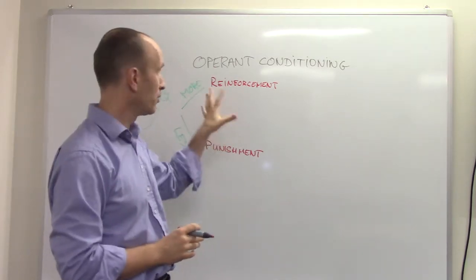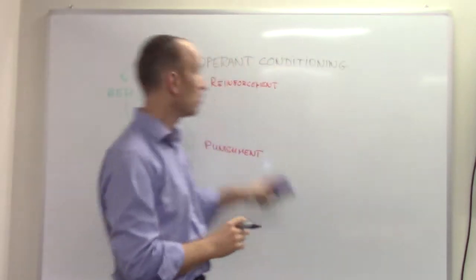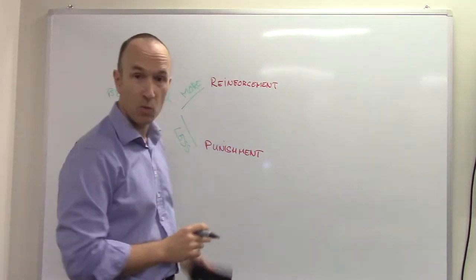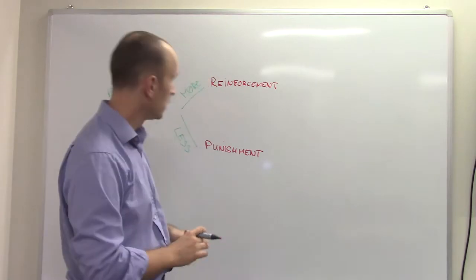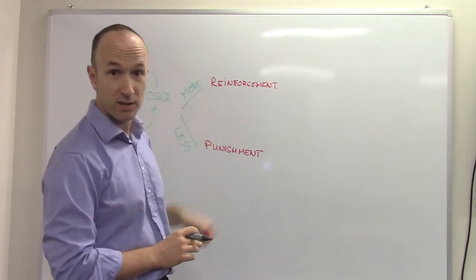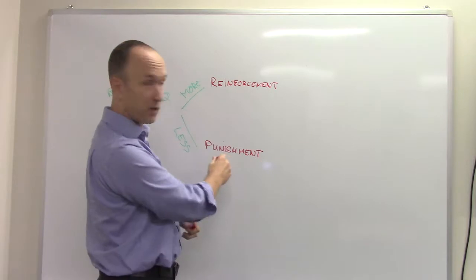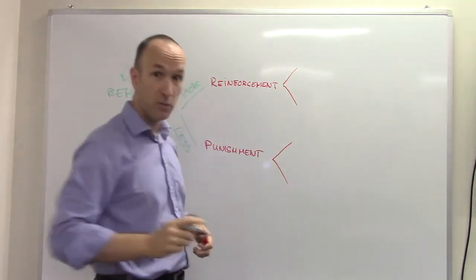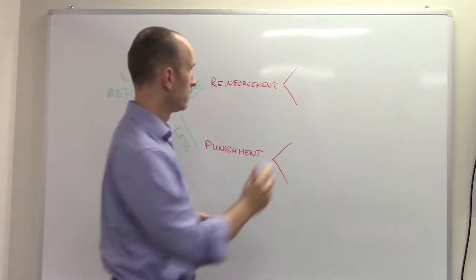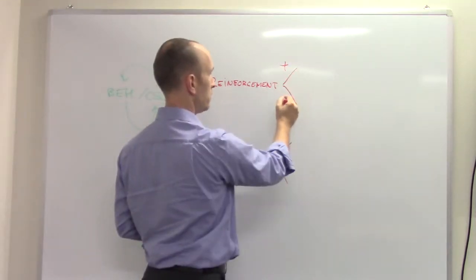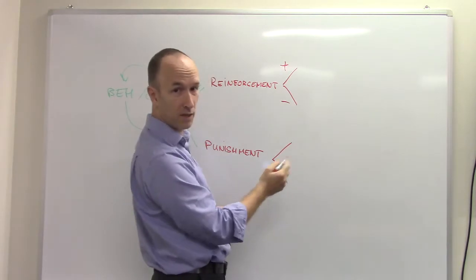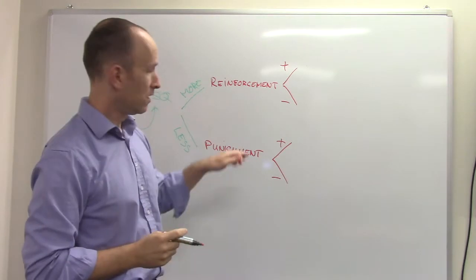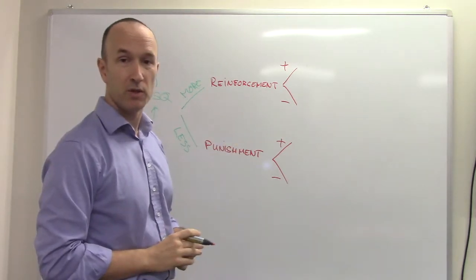That makes pretty good sense overall, and generally people are quite okay up until here. Here's where it gets tricky, because reinforcement and punishment can both be done in two ways. One is positive, one is negative — and that goes for both. That's where most people start to trip themselves up.